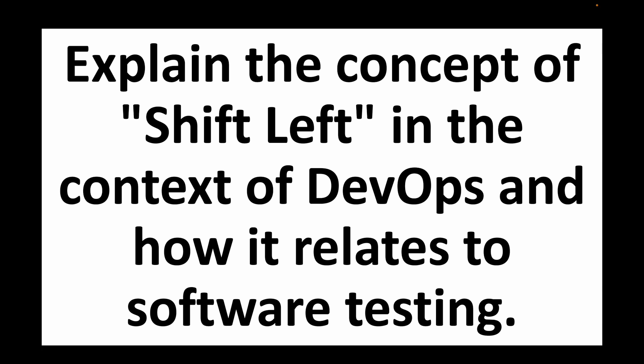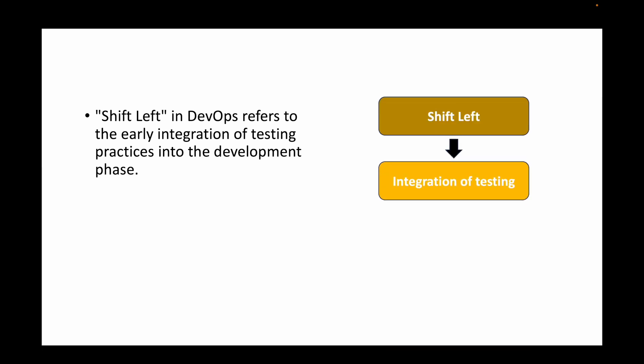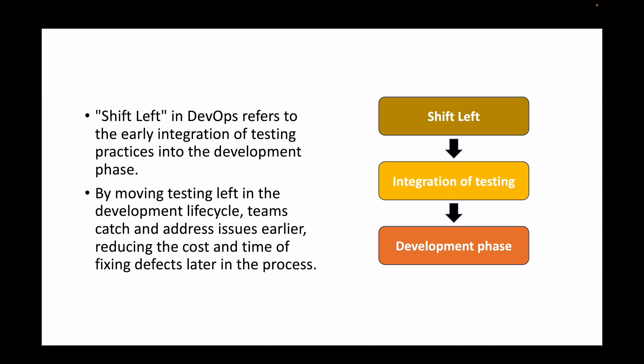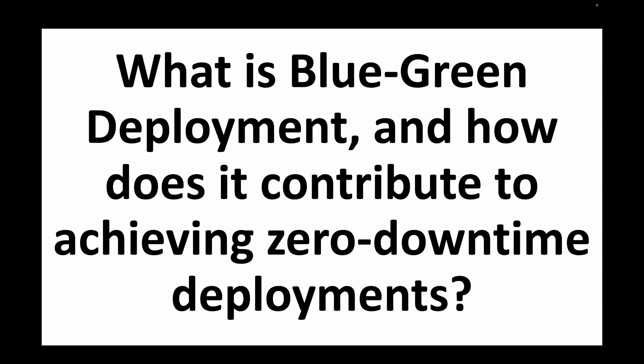The next question is: explain the concept of shift left in the context of DevOps and how it relates to software testing. Shift left means integrating testing into the development phase itself, rather than testing after development is complete. This helps teams catch issues much faster and address them earlier, which reduces the cost and time of fixing defects. Finding bugs later in the cycle costs more money and time, so shift left helps by integrating testing during development.